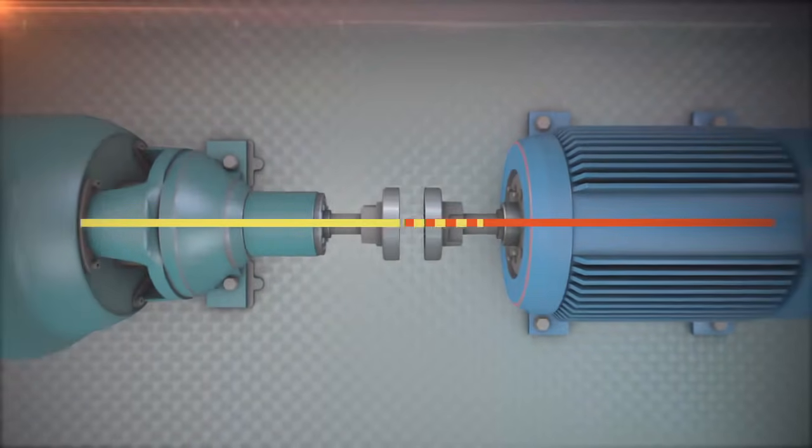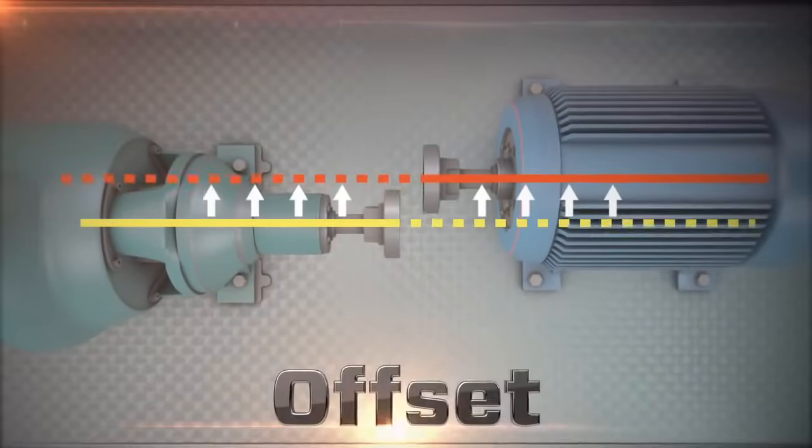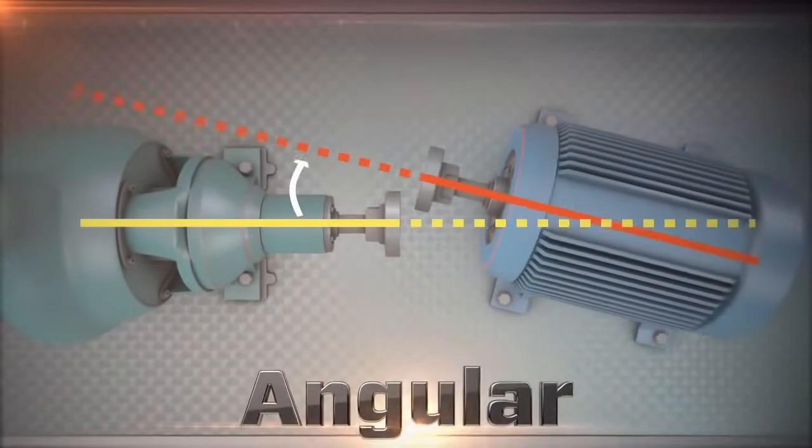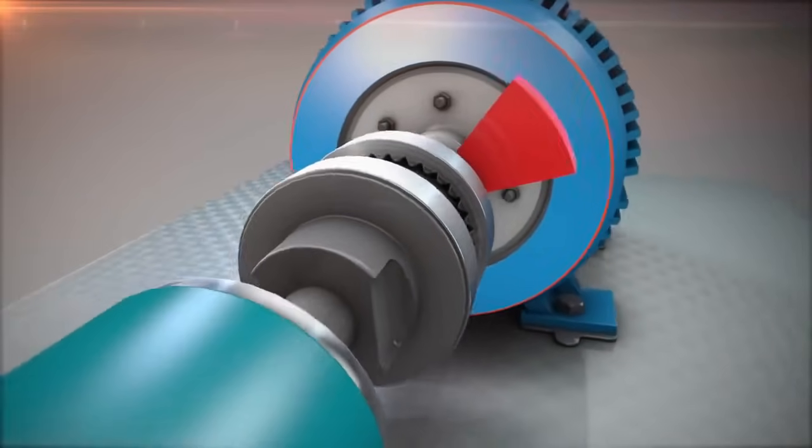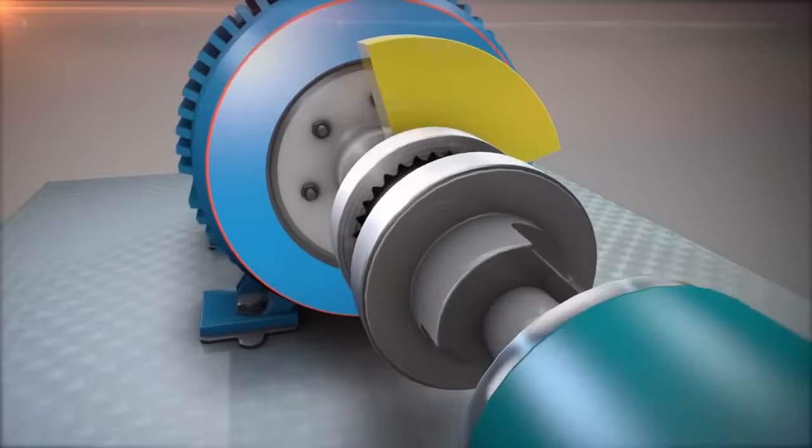Both vertical and horizontal directions each have a combination of offset and angular misalignment. To measure, we rotate the shafts to find the relative positions between the two center lines of rotation.